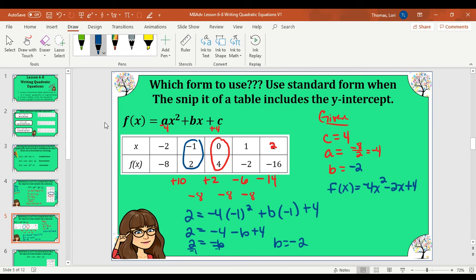Again, when you're going to use standard form, you have to have the y-intercept and your x values have to go in sequential order. This way you can actually find the second difference. And then once you find the second difference, like here negative 8, you divide it by 2.